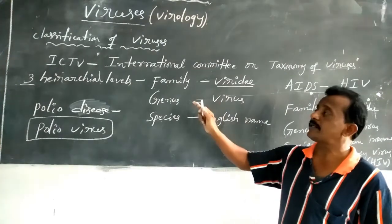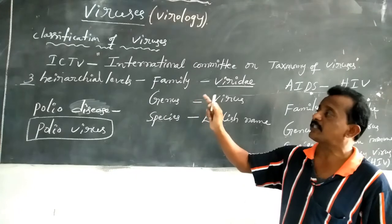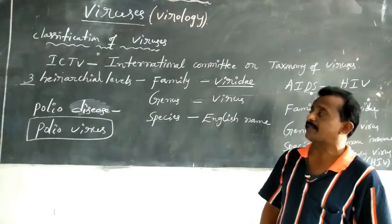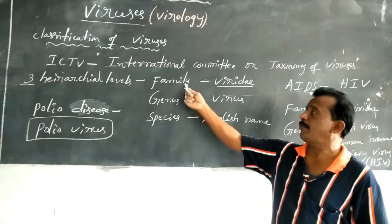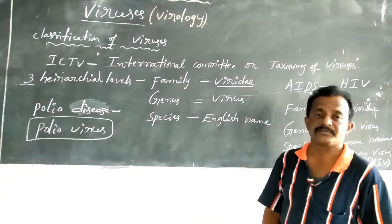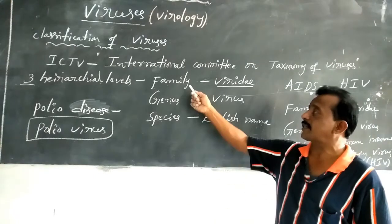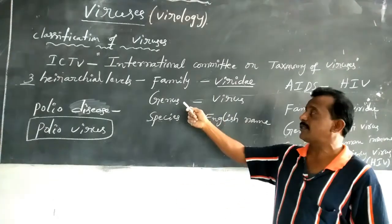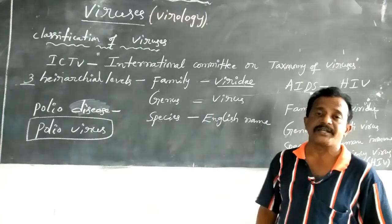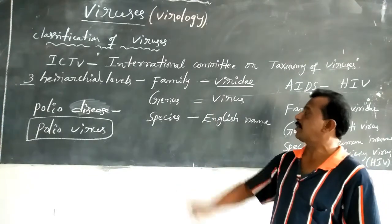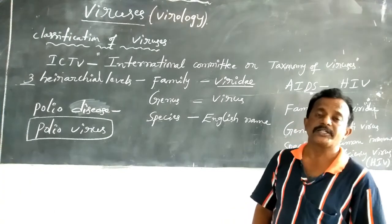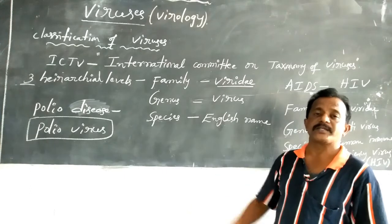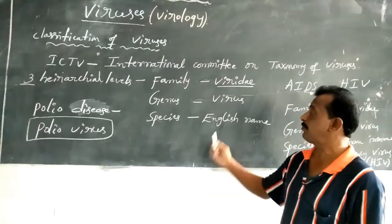Any ICTV system contains only three hierarchical levels — that is Family, Genus, and Species. Family is always described by the suffix word 'viridae'. Genus is always described by the virus name. And Species is always described by common English names, dependent upon the expression of their nature.